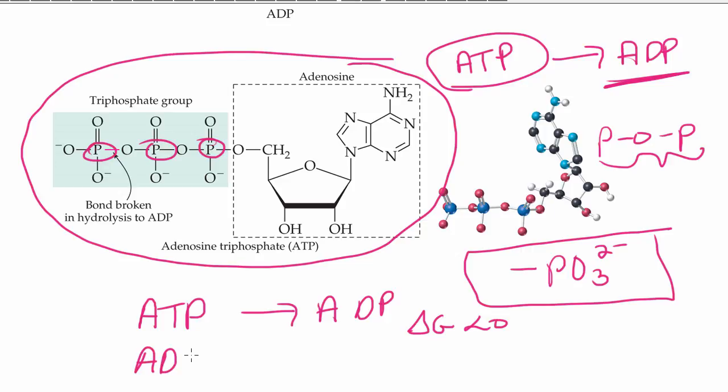Now, remember, the reverse, when we have ADP being converted to ATP, this involves the transfer of a phosphoryl group from some molecule to the ADP, which results in the formation of ATP. And that, as we know, requires some energy.